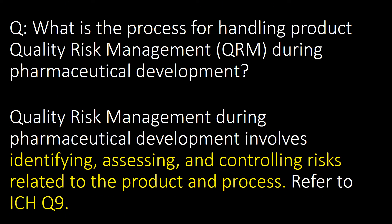What is the process for handling product quality risk management (QRM) during pharmaceutical development? Quality risk management during pharmaceutical development involves identifying, assessing, and controlling risks related to the product and process. Refer to ICH Q9.